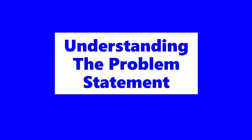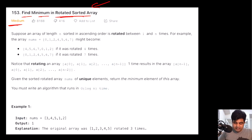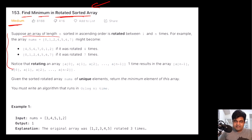This is a LeetCode medium problem, and basically we need to find the minimum inside a rotated sorted array. You may ask what a rotated sorted array means — we are given a definition of it. If you want you can iterate over the definition, but let me quickly show it to you with an example.